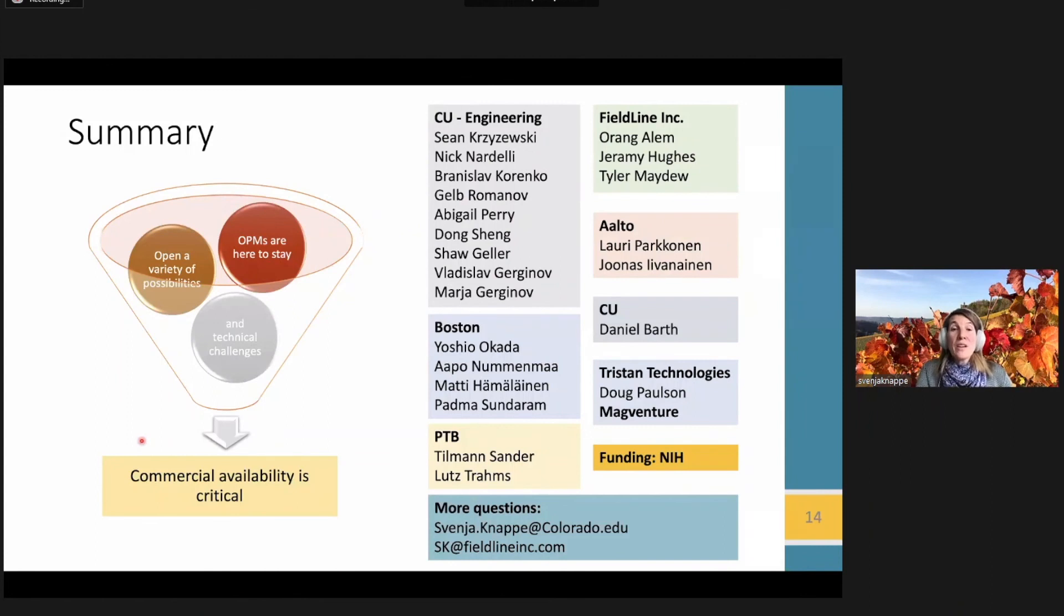So let me quickly summarize, OPMs are here to stay. They open a variety of possibilities for neuroscience research, but there's still technical challenges that have to be used. And it's absolutely critical that we translate this and make them commercially available, and then work with neuroscientists to make this technology real OPM MEG systems. I want to recognize all my colleagues at CU FieldLine, as well as our collaborators, and of course, the funding from NIH. Thank you. Please, I'm open for questions, but send me emails if you want to talk to me about any of what I presented today. Thank you.